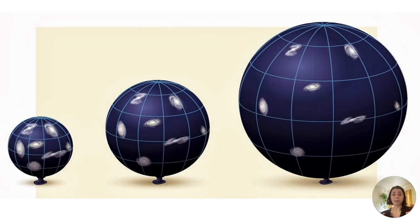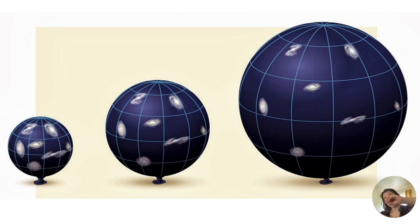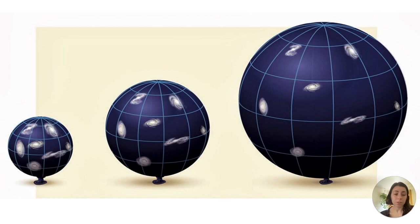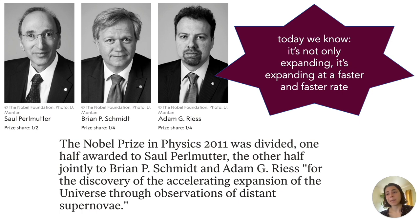Here's an image of what an expanding universe looks like: imagine drawing grid lines on a balloon and slowly inflating it. The distance between each line on the grid grows. Two galaxies far apart on the original balloon seem to move even further away more quickly than two galaxies that are closer together, because the space between them is expanding. Since the time of Hubble, we've found not only is our universe expanding, it's expanding at faster and faster rates — and the three people who made those observations received a Nobel Prize.